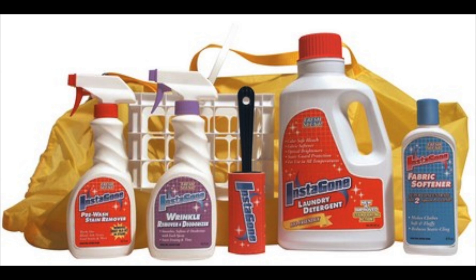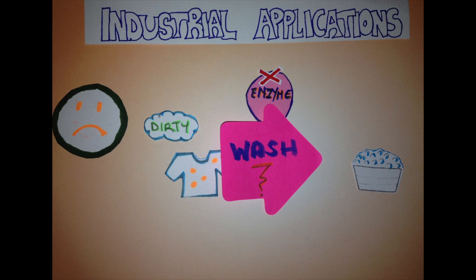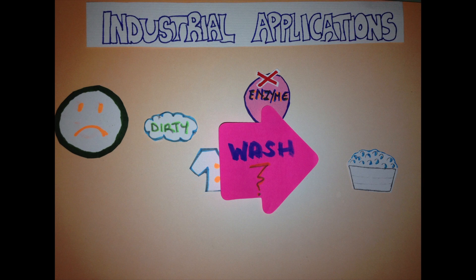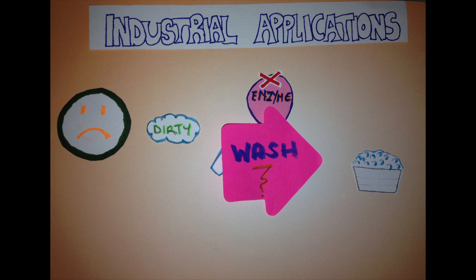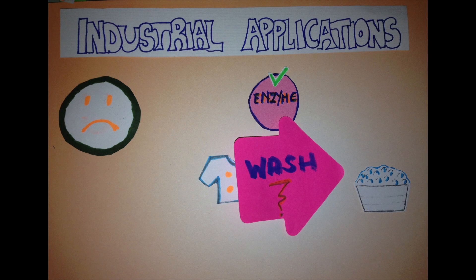Now we look at the industrial uses of enzymes, continuing with the lipase example. Lipase is also found in detergent soap, which we normally use for washing clothes. The main idea of having lipase in detergent is so that it can assist in the removal of fatty and oily stains. It can also be used in biological fabric conditioners.